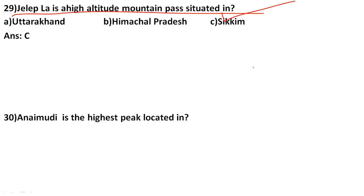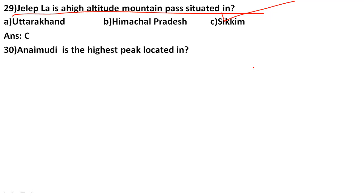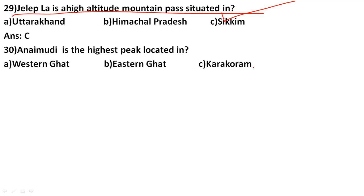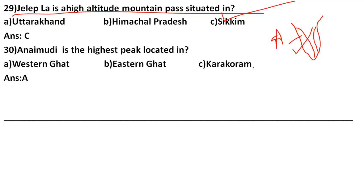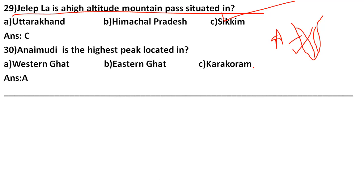Anaimudi is the highest peak located in which range? Options: Western Ghats, Eastern Ghats, Karakoram. The correct answer is A, Western Ghats. South India has both Eastern Ghats and Western Ghats, and Anaimudi is located in the Western Ghats.